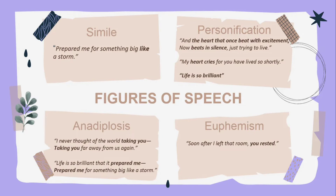Another example of personification: 'My heart cries for you have lived so shortly' — crying is a human behavior associated with the heart, which is an organ. Also, 'Life is so brilliant' — brilliant is a human attribute, and life is abstract, so that also makes it personification.